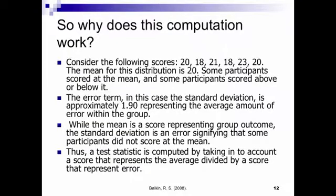So consider the following values: 20, 18, 21, 18, 23, and 20. If you were to calculate the mean for those six values, you'd get a mean of 20. Some participants scored at the mean, some scored above it, and some scored below it. So in order to account for that variability, we calculate an error term. In this case, a standard deviation of approximately 1.9, which represents the average amount of error from the mean.